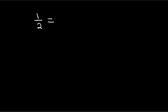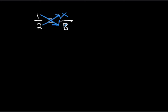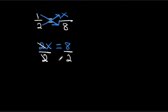Let's use one half is equal to x over eight. We're going to use the property of proportions and cross multiply. We multiply two times x and one times eight, so we write two times x equals one times eight, which is eight. To solve for x, we isolate it by dividing by two. The twos cancel, and x is equal to four because eight divided by two equals four.